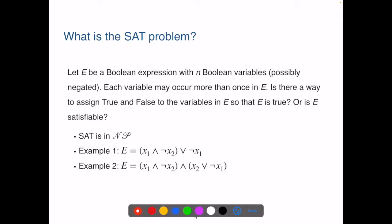Example 1 is Satisfiable. We can set X1 as True and X2 as False. So NOT X2 is also True. And that will give us the first clause as True.